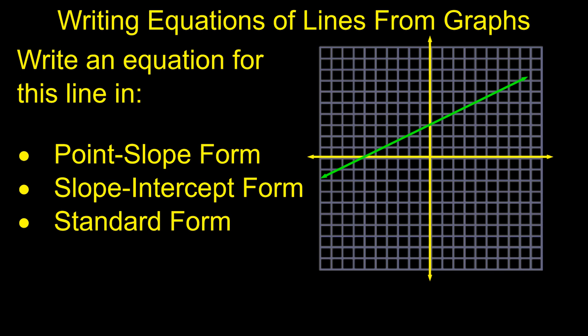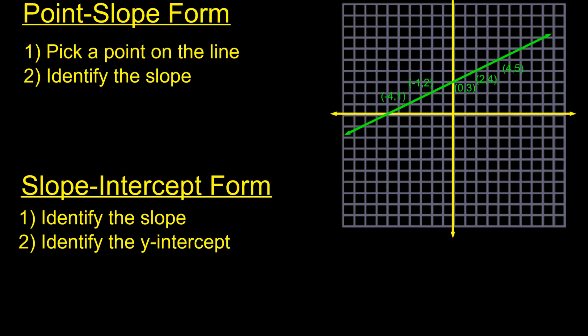We're going to start with point-slope form. You're given this line, and there are a bunch of points on it. Typically you would list all the points out: there's (1, 2), (4, 5), (-2, 2), and (-4, 1) — so there are several different points on that line.